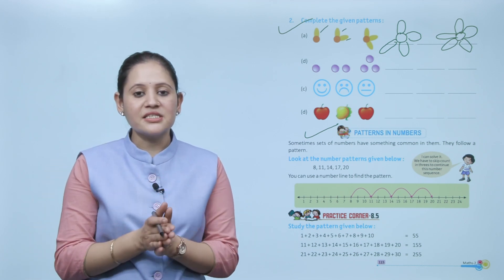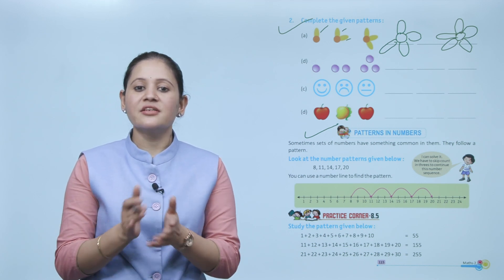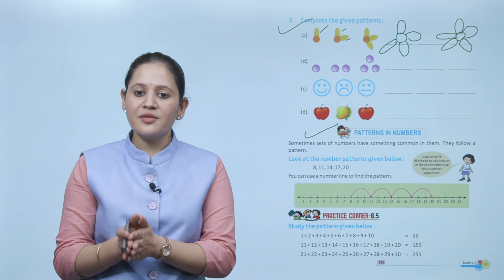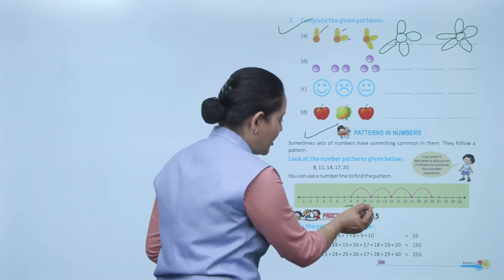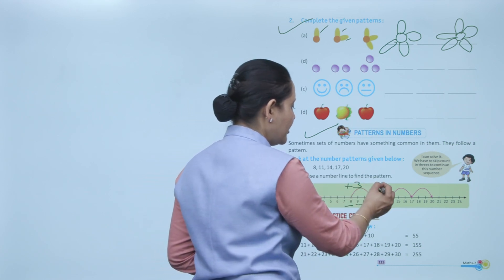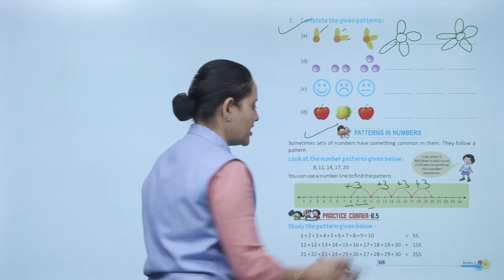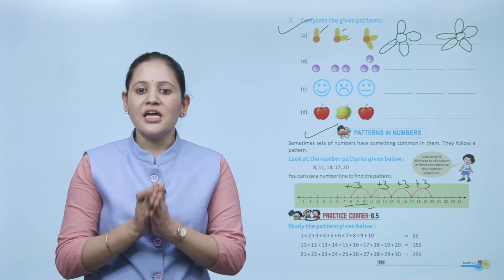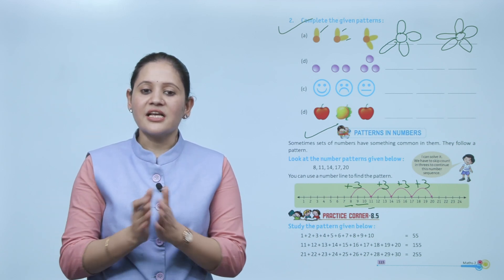Earlier we saw how to make patterns in shapes; now we make patterns in numbers. Sometimes sets of numbers have something in common — they follow a pattern. Look at the number pattern: 8, 11, 14, 17, 20. From 8 to 11 we add 3; then 11 plus 3 is 14; 14 plus 3 is 17; 17 plus 3 is 20. Every time we are adding 3 — we skip count in 3's to continue the number sequence.